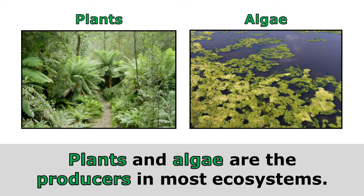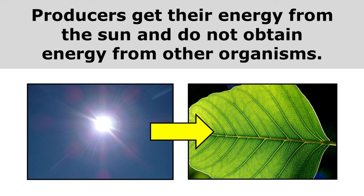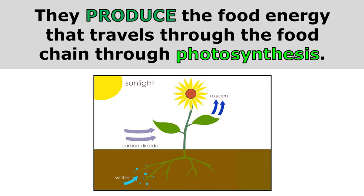Plants and algae are the producers in most ecosystems. Producers get their energy from the sun and do not obtain energy from other organisms. They produce the food energy that travels through the food chain through photosynthesis. Plants need water, carbon dioxide, and sunlight so that they can make food.